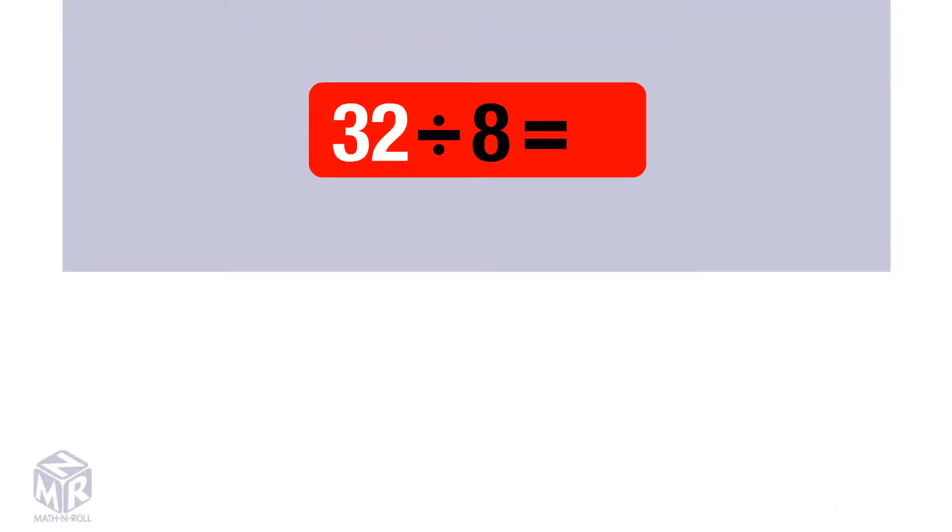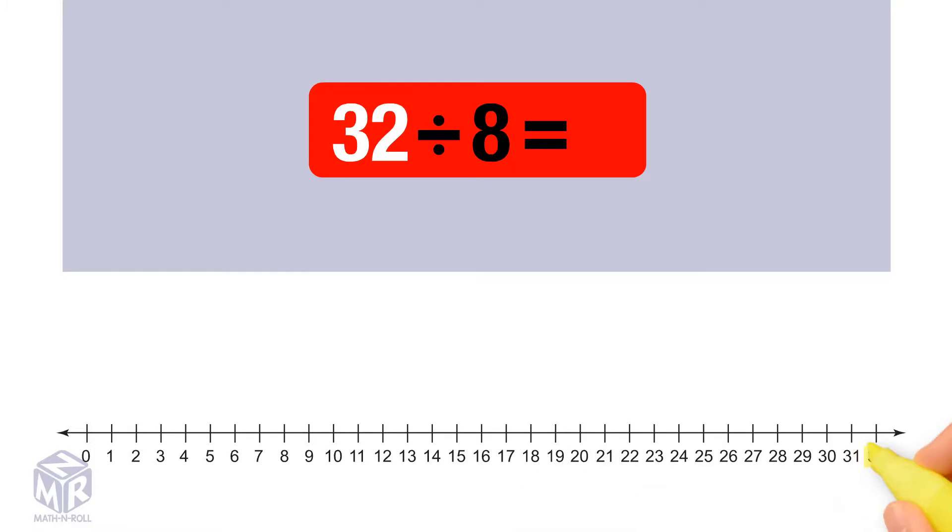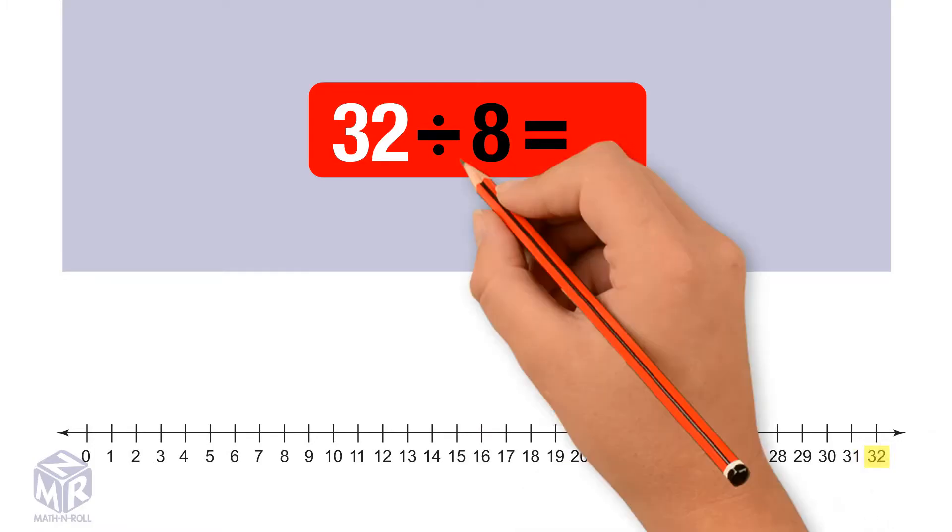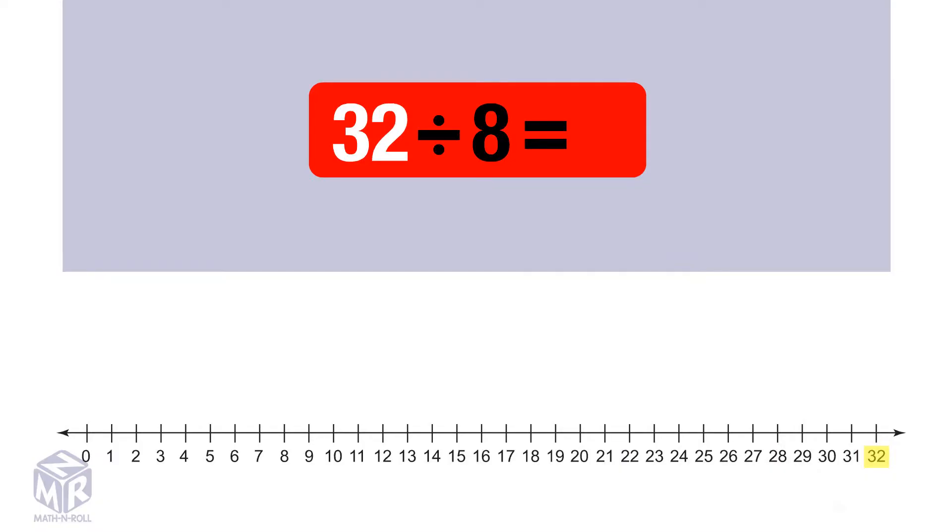Let's try another one. 32 divided by 8. Start at 32. Count back by 8. Do this as many times as you can until you reach 0.